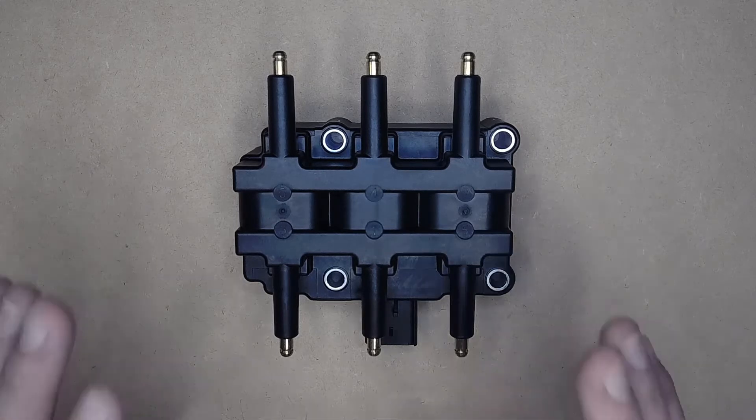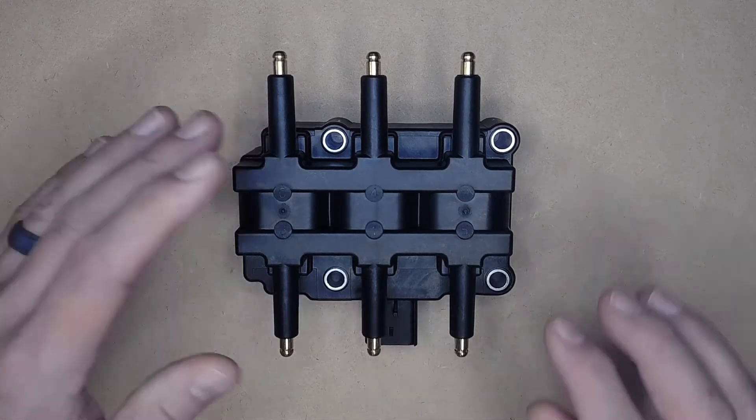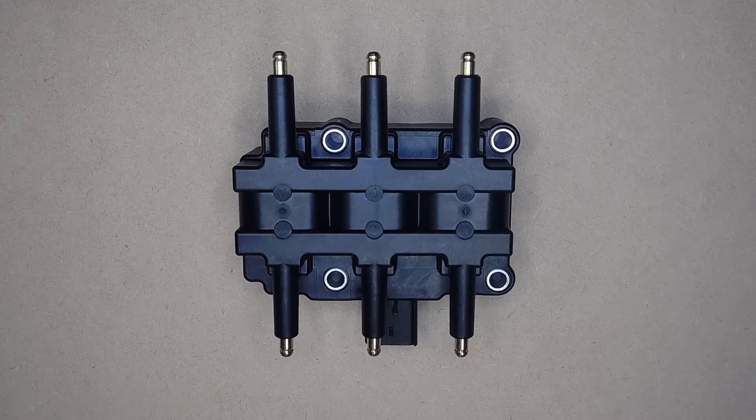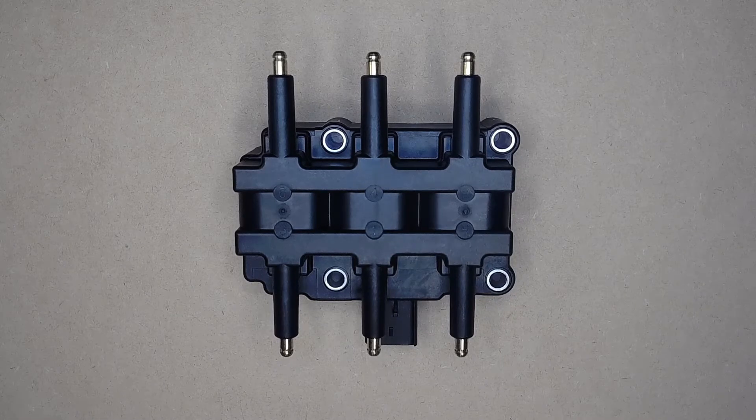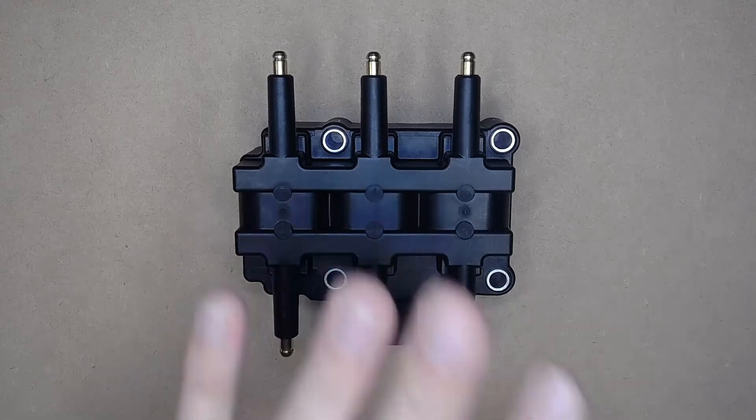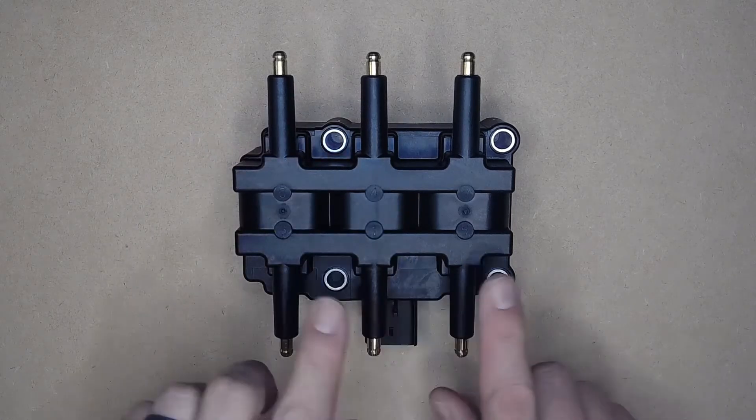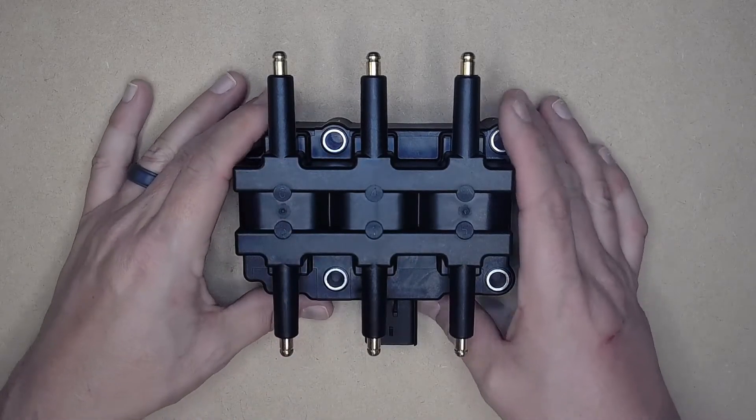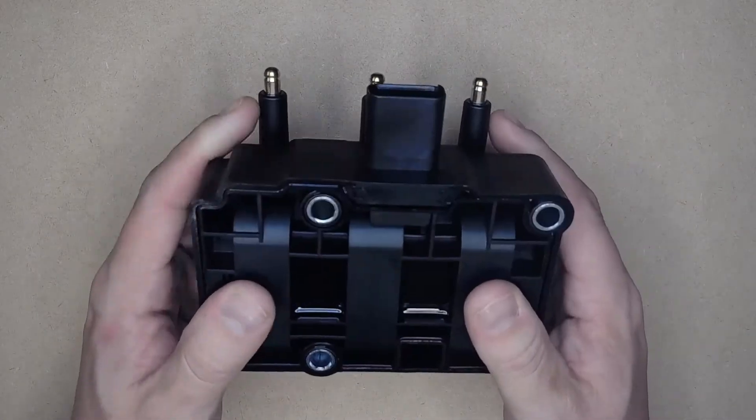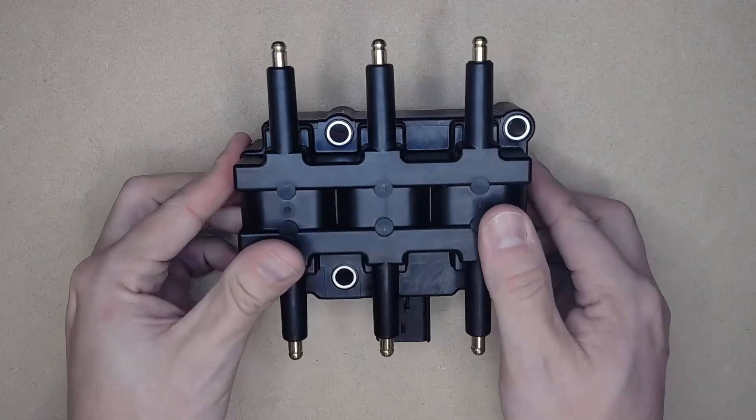What your ignition coil pack does is it receives a signal from the vehicle's ECU to send power to the spark plugs through multiple spark plug wires, which ignites the fuel in your engine at the right time. This coil houses all the cores along with the distribution capabilities inside, where a very strong yet precise spark is created that is sent through the spark plug wires to the correct spark plug.